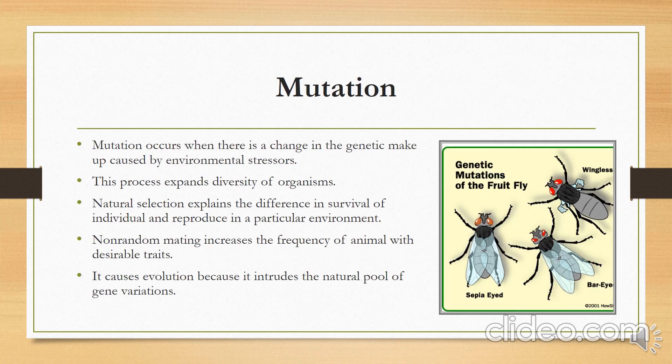Mutation is another mechanism of evolution that occurs when there is a change in the genetic makeup caused by environmental stressors. When this happens, it expands the diversity of organisms. Natural selection explains the difference in survival and reproduction of individuals in a particular environment. Non-random mating increases the frequency of animals with desirable traits. Mutation causes evolution because it increases the natural pool of gene variation.